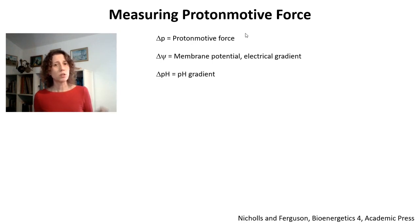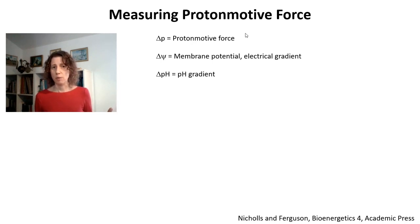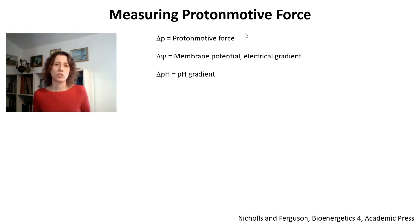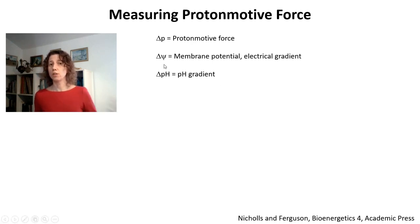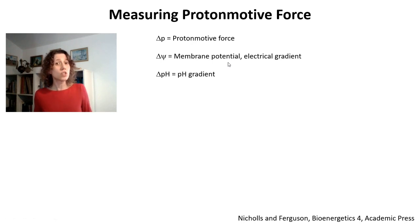The second component is delta pH — the pH gradient, or how much free protons exist on both sides of these membranes. Typically in biological media and in mitochondria, because they're permeable to an anion such as phosphate, delta pH is quite low because you have this buffering capacity and a permeable anion. So the major component of the proton motive force is actually the inner mitochondrial membrane potential in its electrical characteristic, and that's generally what we measure.